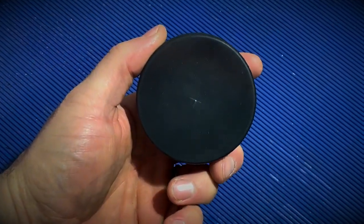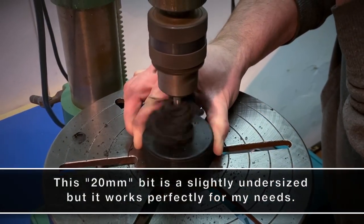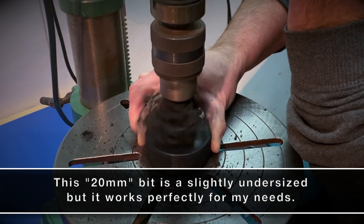I found and marked the center on the bottoms of four pucks, took them over to my drill press, and with my 20mm Forstner bit, I drilled the hole about 9 sixteenths of an inch deep.